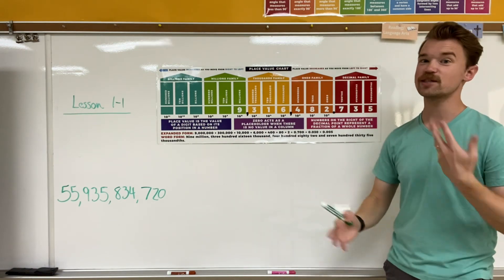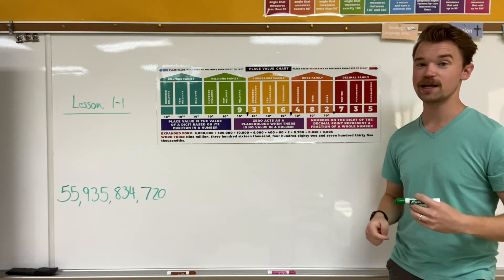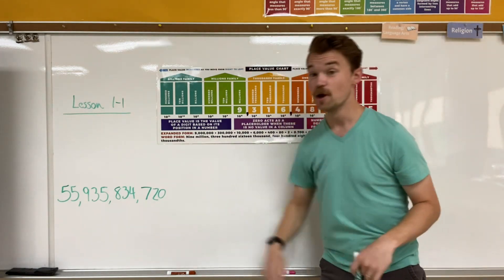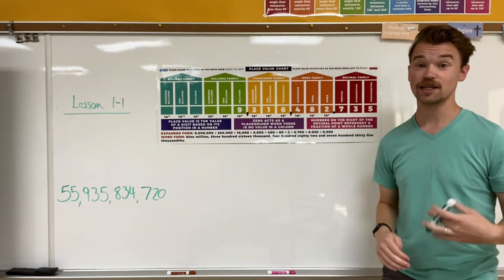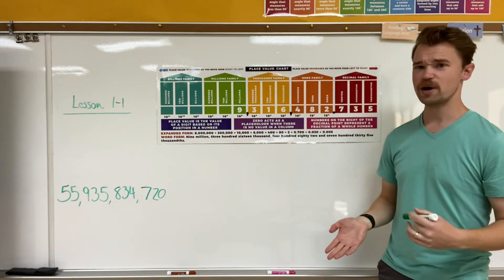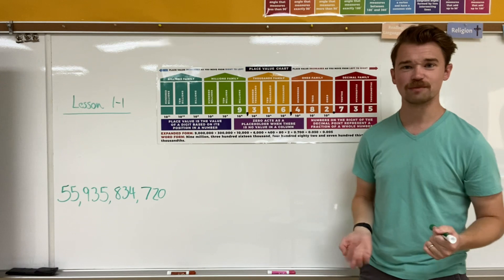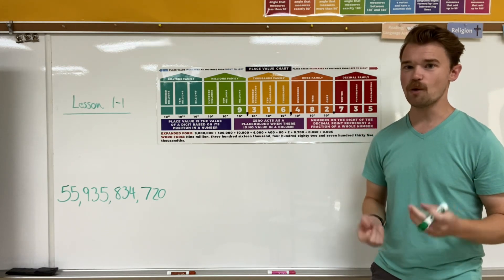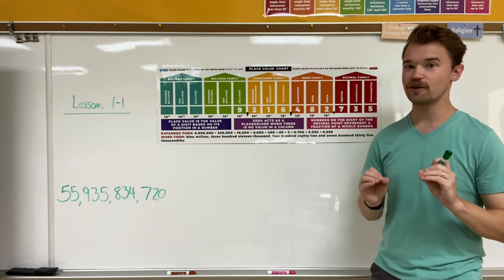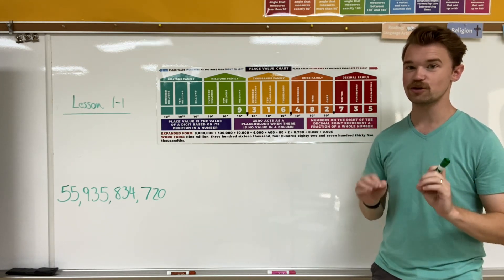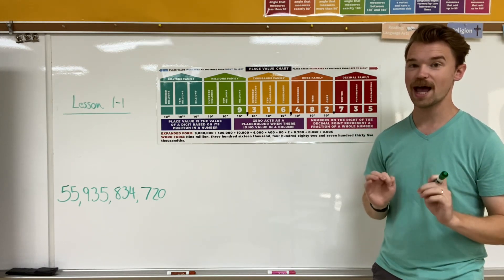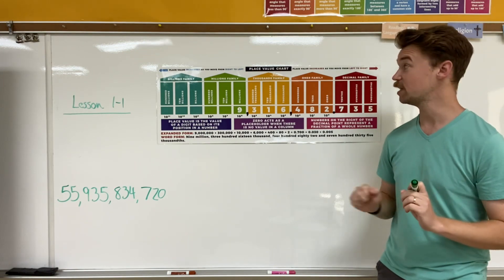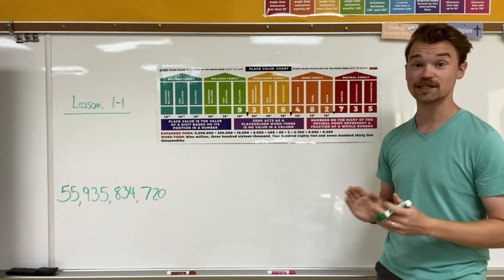So in your math assignment today, we're going to be writing things in standard form. We're also going to be writing things in word form — or number name, as your book calls it. And we're going to be figuring out what place value a certain digit has in a certain place.